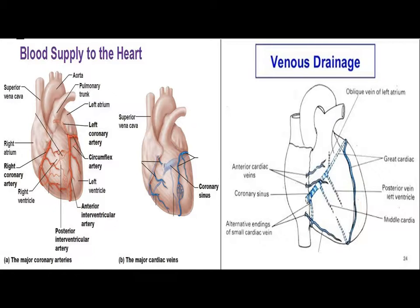The remaining left ventricle is supplied by the left coronary artery, which is a branch of the posterior left sinus of Valsalva. The left coronary artery passes downward just left to the pulmonary trunk and continues as the left circumflex artery, which passes in the posterior atrioventricular groove and anastomoses with the right coronary artery.